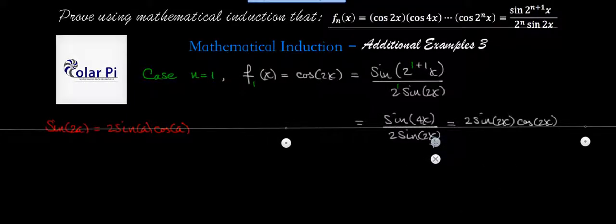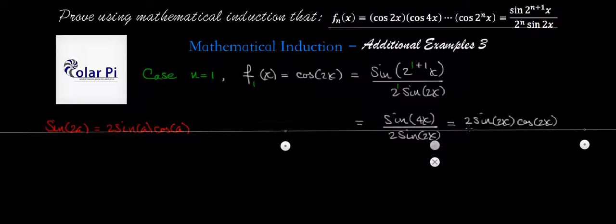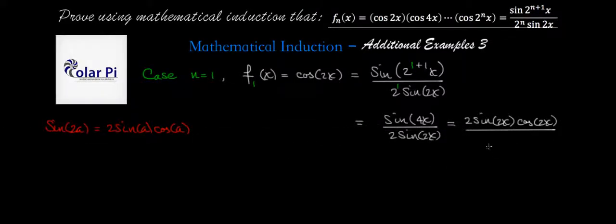So this here is divided by 2 times sine 2x. And now we can cancel — boom, boom — and clearly we get cosine 2x as desired. And so there's case one done.